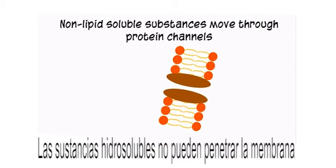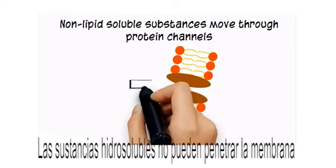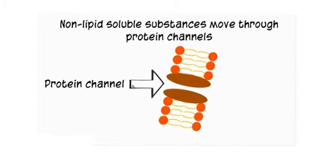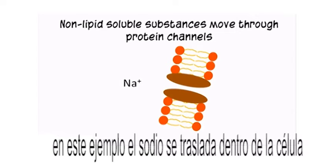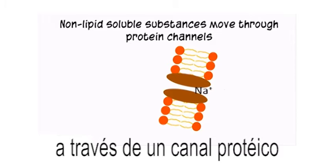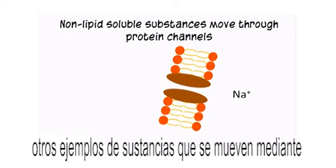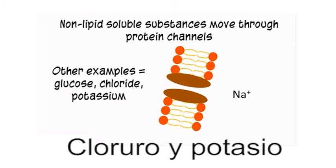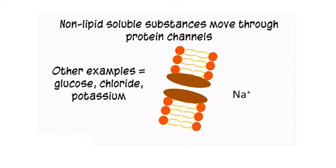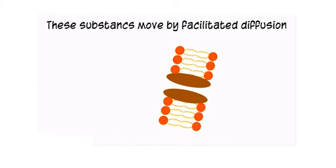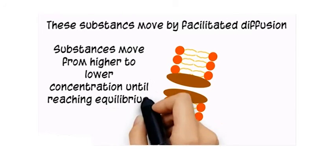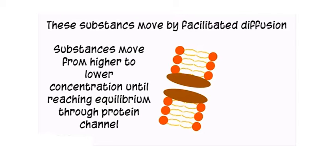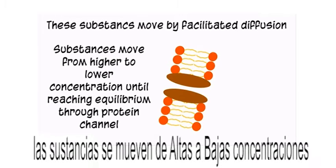Non-lipid soluble substances cannot pass through the membrane, so they need a special doorway called a protein channel. In this example, sodium moves into a cell through a protein channel. Other examples of substances that move through protein channels include glucose, chloride, and potassium. We can say that these substances move by facilitated diffusion. In facilitated diffusion, substances move from higher to lower concentration until reaching equilibrium, but through a protein channel.